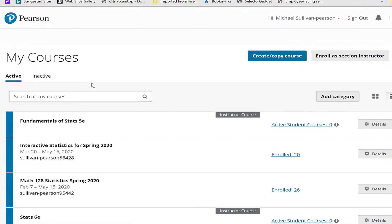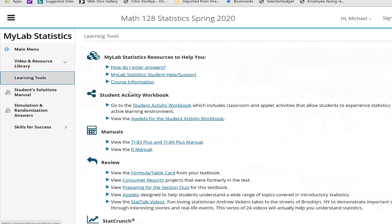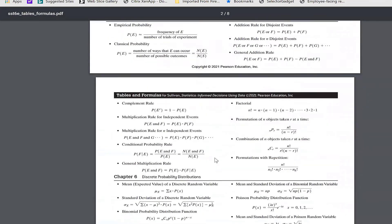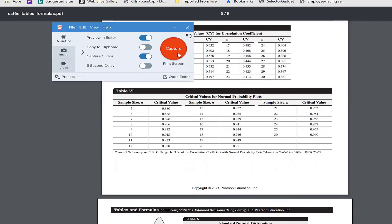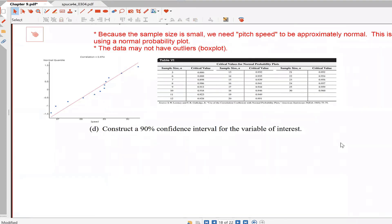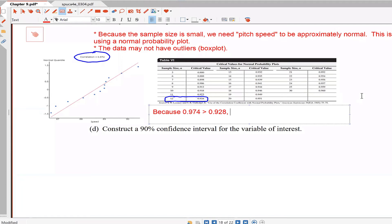The table will be part of the MyLab exercise. I'm going to have to go into MyLab, video resource library, learning tools, formula table card. There's that table 6 that we use to compare our correlation stat against. We're going to compare our correlation stat, 0.974, to the critical value where our sample size is 12, which is 0.928. Because the correlation statistic of 0.974 is bigger than the critical value of 0.928, pitch speed is approximately normal.